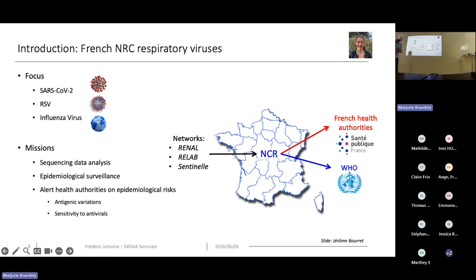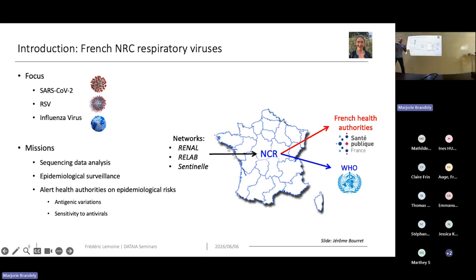At the National Reference Center for Respiratory Viruses, headed by Marianne Rameix-Welti, we focus mainly on SARS-CoV-2, respiratory syncytial virus, and influenza viruses. Our missions include sampling from patients, testing them for different respiratory viruses, and for positive samples, sequencing them and analyzing the data. This supports epidemiological surveillance and alerting health authorities. We focus especially on sensitivity to antivirals and monitoring for new mutations that could be problematic.